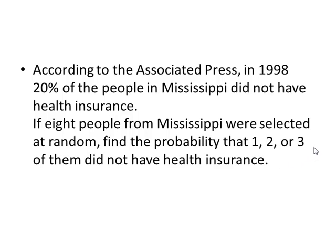According to the Associated Press, in 1998, 20% of the people in Mississippi did not have health insurance. If eight people from Mississippi were selected at random, find the probability that one, two, or three of them did not have health insurance. n is eight. Out of eight people, we're looking for one, two, or three. Those are our values for x that do not have health insurance. The 20% is the percentage that did not have health insurance, so that's our value of p.